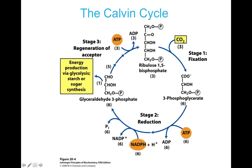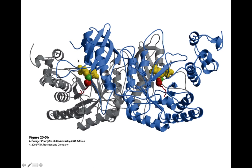The key enzyme for this process is ribulose 1,5-bisphosphate carboxylase oxygenase. This is commonly known as RuBisCO — R-U-B-I-S-C-O — and it's probably the most abundant protein on Earth because plants are far more abundant than any other organism, and all plants use it. This enzyme is involved in reducing CO2 with NADPH, which has been generated in the light reactions of photosynthesis, and that's going to allow us to create carbohydrates.